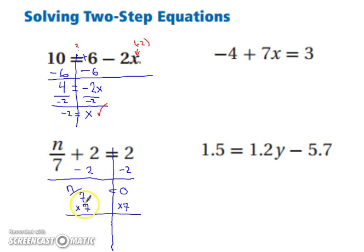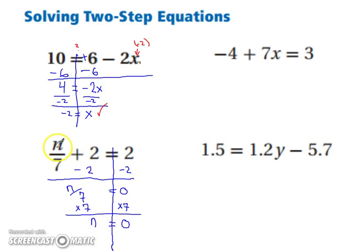Our sevens cancel out, so we're left with n on the left. We have zero times seven — anything times zero is zero. So n is by itself. Let's substitute zero in to double check: zero divided by seven is zero. Zero plus two equals two. Is two equal to two? Yes it is. So we're good to go.